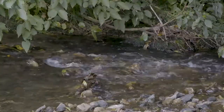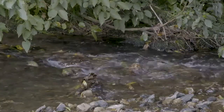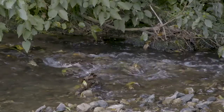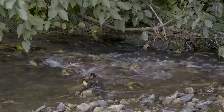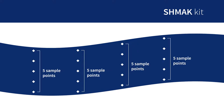For very small streams less than 2 metres wide, monitoring can be carried out in a zigzag path along the stream. For wider streams, set up 2 survey lines with 10 evenly spaced points, or 4 survey lines with 5 evenly spaced points.